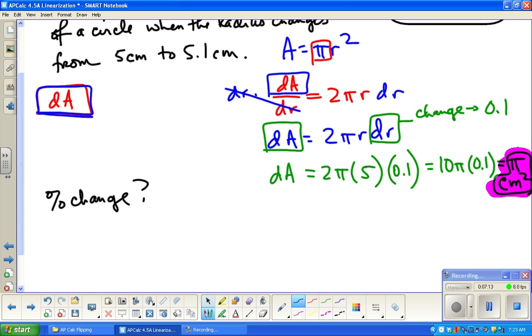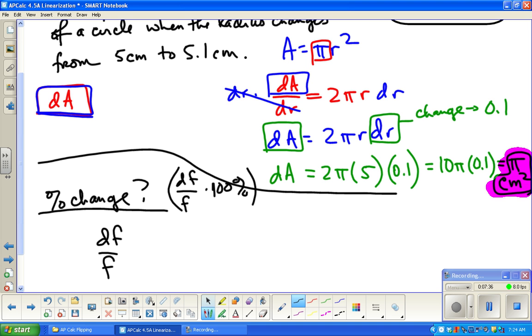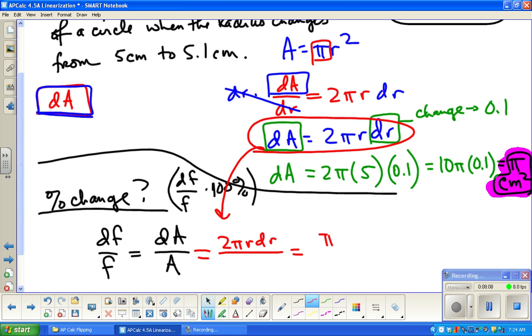Now let's adjust that just a smidge. I would also like to know the percent change. So percent change is based on relative change. So that's how I'm going to start. I'm never going to write the whole percent change formula. Remember, it would be like df over f times 100%. You're not going to see me do that. What I'll do is just do df over f and then I'll just change it to a percent. So in this case, what we're going to do, since we're talking about area, it's dA over A.